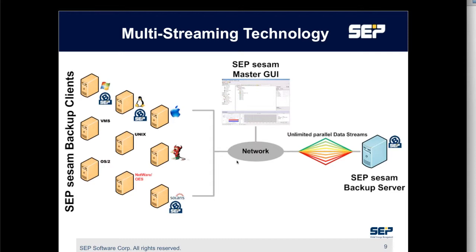The next thing I wanted to talk about is our performance, and this is where our multi-stream technology comes into play. It really makes a huge difference. In this diagram you can see about nine servers on the left-hand side, all different kinds of operating systems. Traditionally, backup software would start one server, complete a backup, move on to the next server, and so on. With our multi-streaming capabilities, we're able to start multiple jobs and run multiple threads at the same time, and we interweave those threads onto the backup media so we can maximize performance and really utilize the maximum bandwidth we have to work with.